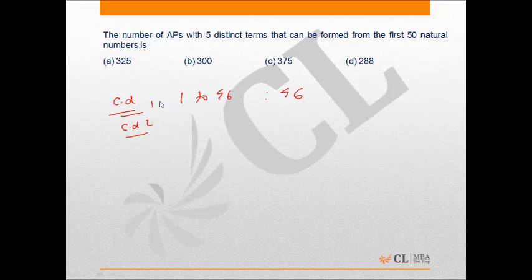Now if common difference is 2, the first term could be anything from 1 to 42 because if 42 is the first term then 42, 44, 46, 48 and 50 would be the 5 terms. That's 42 terms.